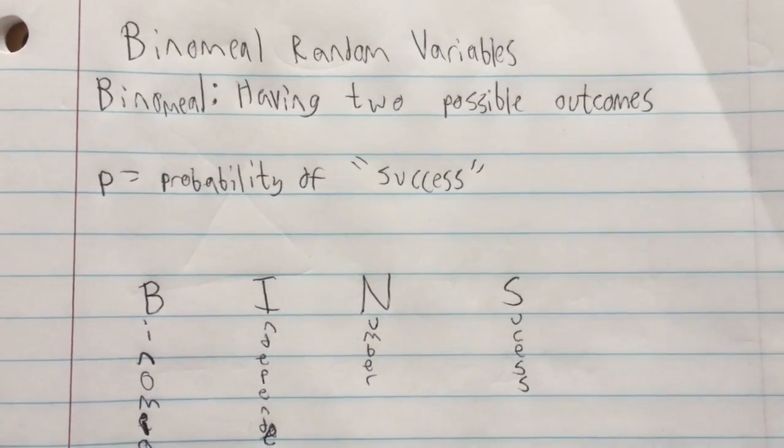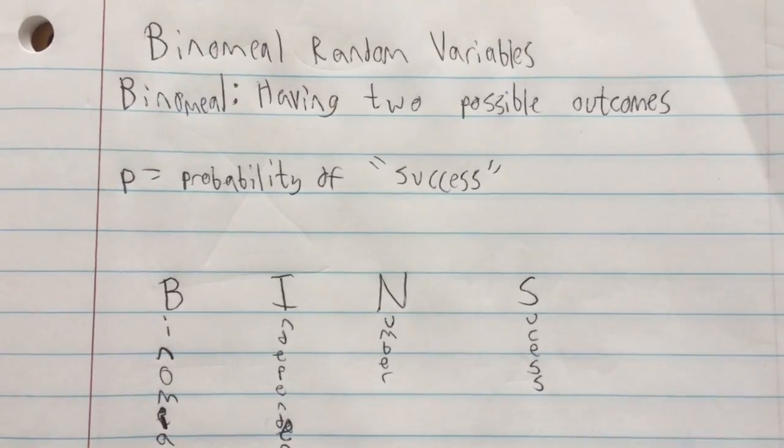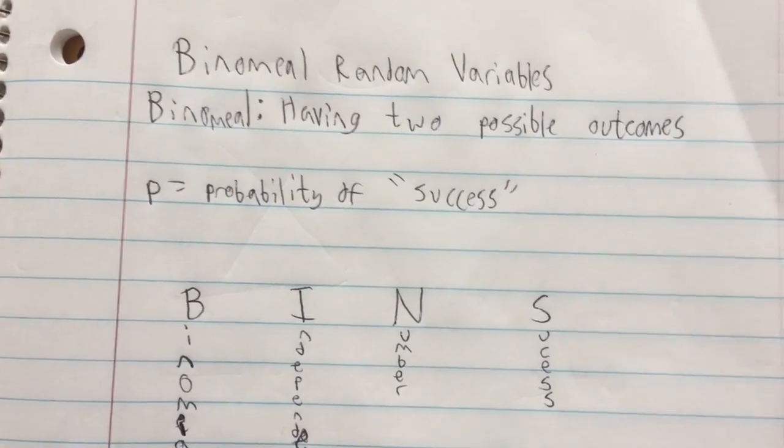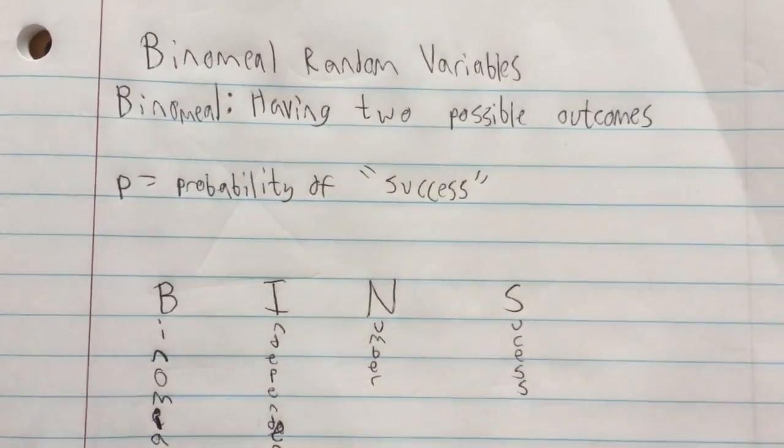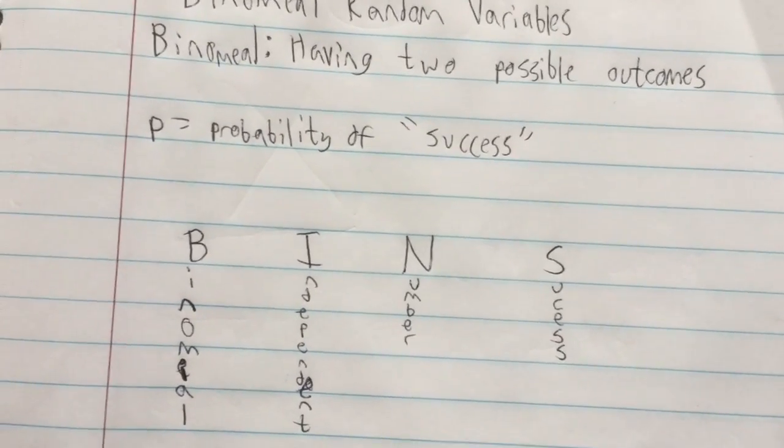There are two outcomes and there's always going to be a set probability of each outcome. P is the probability of success, so in flipping a coin it would be 0.5 or 50%.